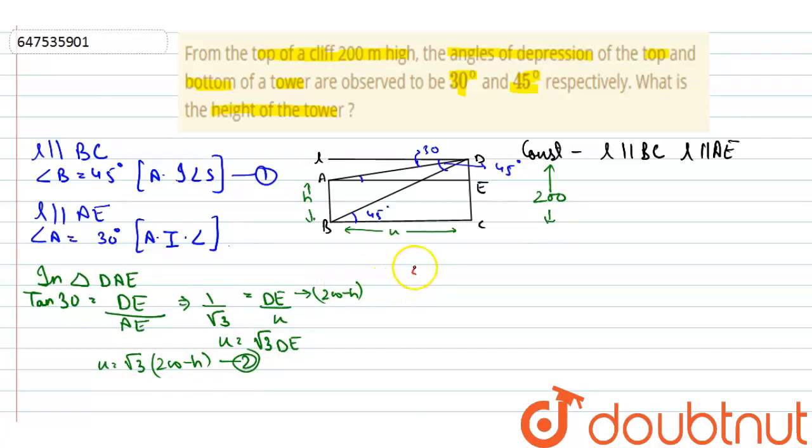Now, similarly, in triangle DBC, right angle at angle B. Tan 45 is equal to DC upon BC. BC which is equal to DC is 200. And BC is X. Tan 45 is equal to 1.